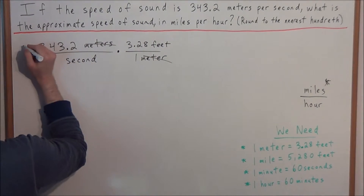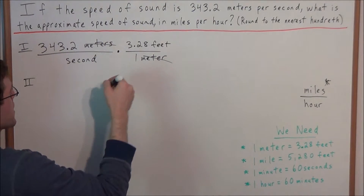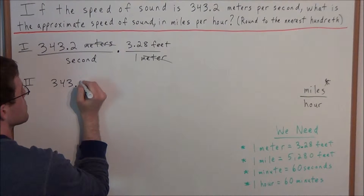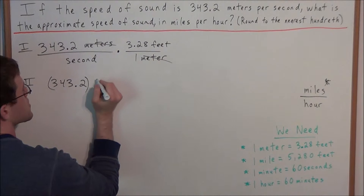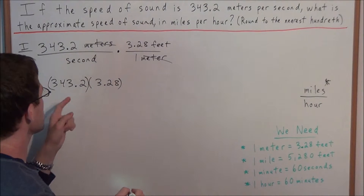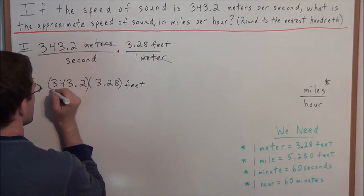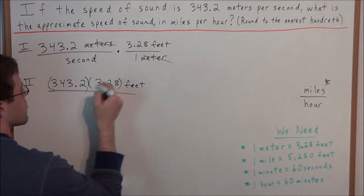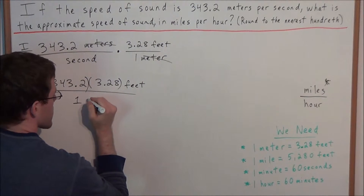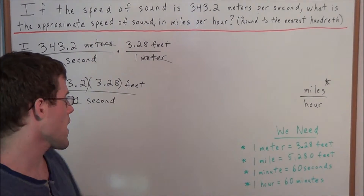Going from step 1 to step 2, notice how meters canceled out. Our next fraction has 343.2 times 3.28, and the only unit left in the numerator is feet, since meters canceled out. In the denominator we have 1 second. So we now have feet per second.